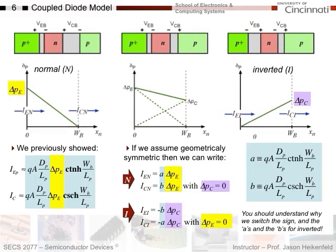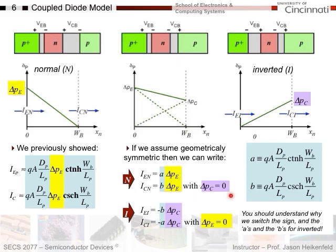Now let's move some things around using the terminal currents we had before. Here's my emitter current and my collector current. If we assume this thing is geometrically symmetric — meaning the area is the same throughout — then we can rewrite these equations as follows. Emitter current in normal mode is A times delta P_E, where A is all the other coefficient terms. Collector current in normal mode uses coefficient B and also has delta P_E. In normal mode, delta P_C equals zero because the collector-base junction is reverse biased.